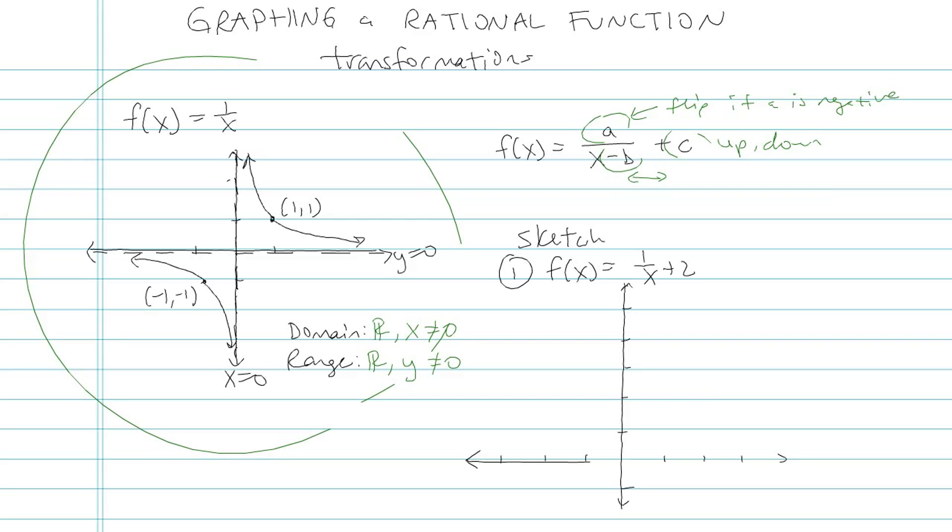f of x equals 1 over x plus 2. Now this plus 2 means I'm going to be taking my parent function and moving everything up 2. So this point that used to be at 1, 1 is now 1, 3. And the point that used to be at negative 1, negative 1 is now at negative 1, positive 1. It's going to have those same branches, the same shape.